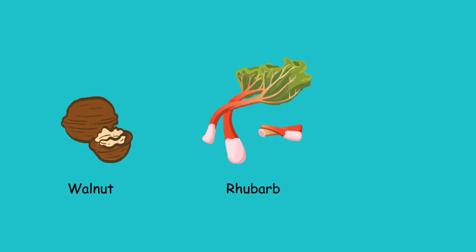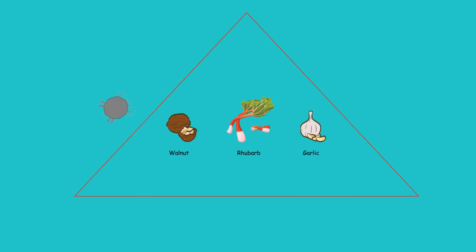Some people believe that taking foods like walnuts, rhubarb, or garlic in the diet can act as an insect repellent, thus helping to get rid of the mites. However, don't rely too much on this information as there is no scientific evidence for their role.